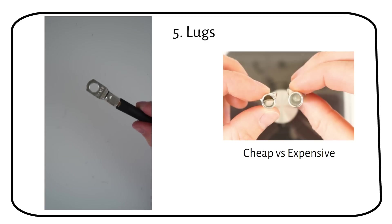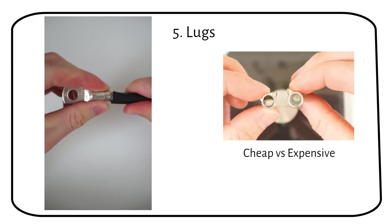Check what happens when we crimp the cheap lugs with the correct die. The lug just comes right off. This is because the walls are not thick enough to compress the lug on the wire. Now look what happens when we use an expensive lug with the same die. It doesn't come off.